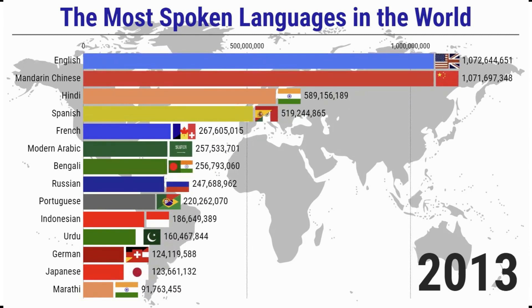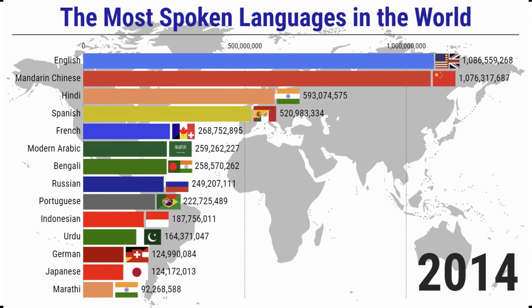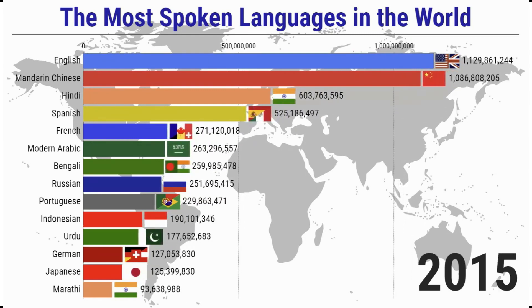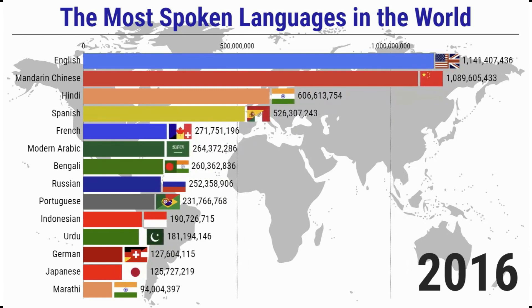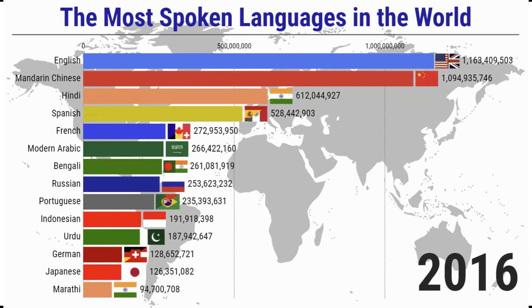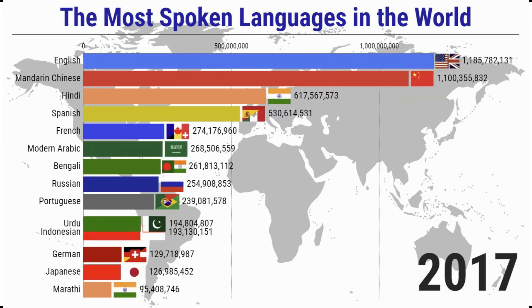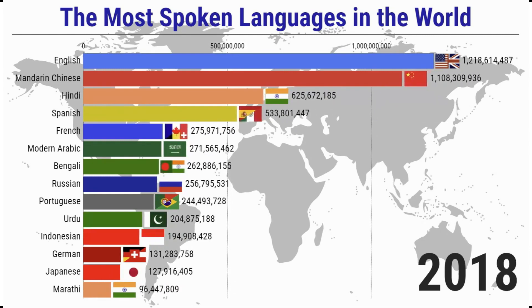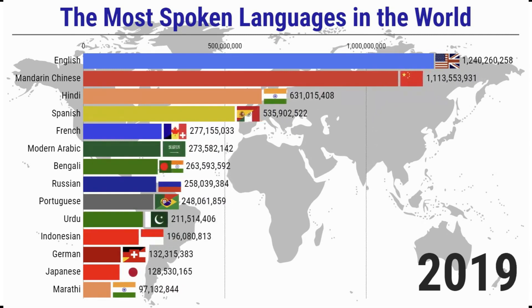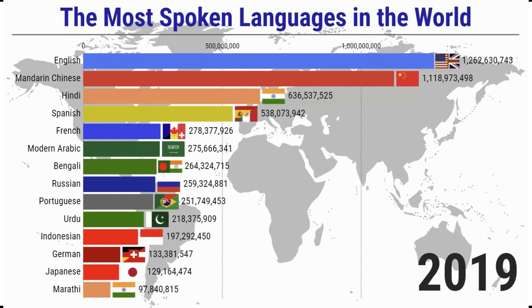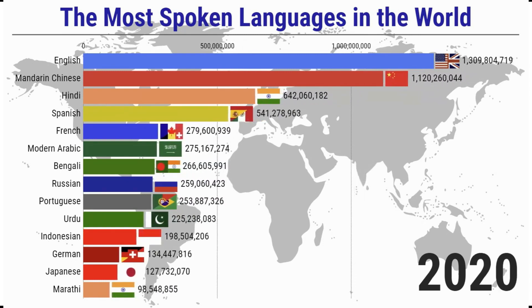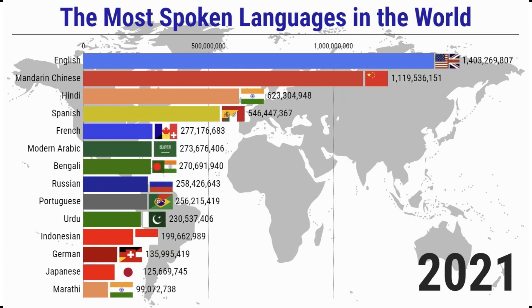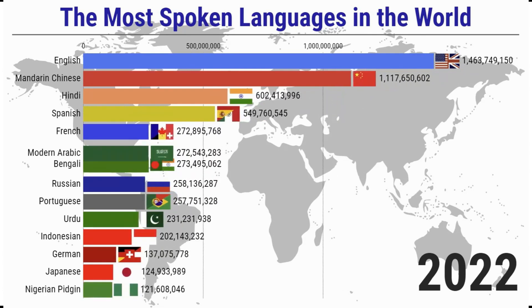the global stock of foreign direct investment was 44.25 trillion U.S. dollars. Of this, the stock of foreign investment from English-speaking countries was 21.1 trillion U.S. dollars, accounting for 47.7 percent, ranking first in the world. The proportion of foreign investment stocks in Japanese and German is 13.5 percent and 10.5 percent respectively, ranking second and third.